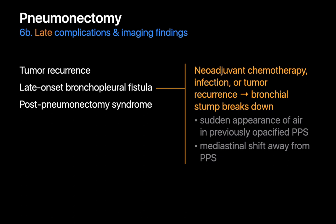A late-onset bronchopleural fistula from breakdown of the bronchial stump is another late complication, more likely in patients who received neoadjuvant chemotherapy, had a post-op course complicated by infection, or developed recurrent tumor at the stump. Imaging features that would prompt suspicion include the sudden appearance of air in a post-pneumonectomy space that was previously completely opacified by fluid, or contralateral mediastinal shift away from the side of the pneumonectomy.